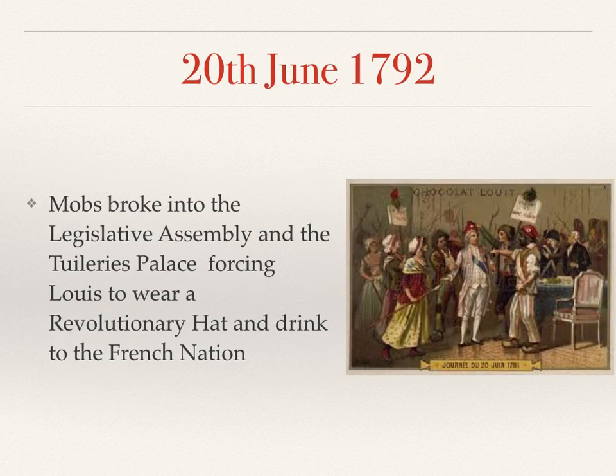This led to a pretty disturbing event on the 20th of June, when mobs broke into the Legislative Assembly and into Louis's home in the Tuileries in Paris. It forced Louis to wear the revolutionary hat and toast to the French nation, which would have been a terrifying experience for both him and his family as they were surrounded by this mob who had broken in.